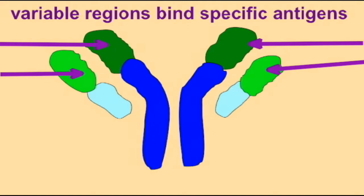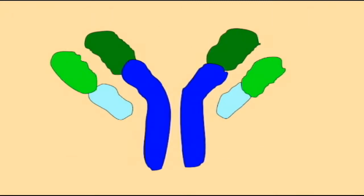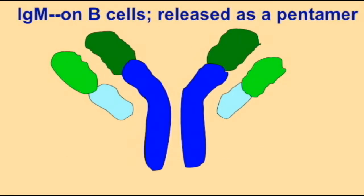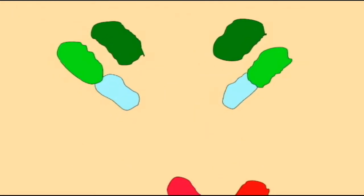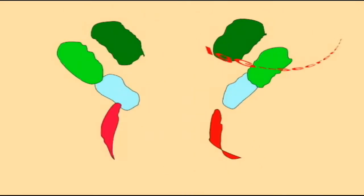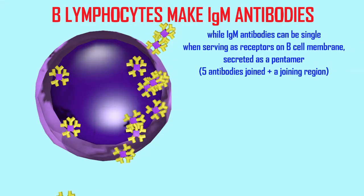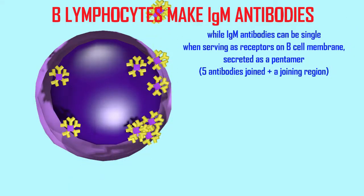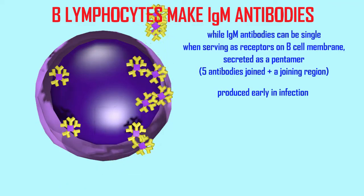B lymphocytes produce antibodies, but the base of antibodies can be changed in something known as class switching, so that antibodies which all bind the same spike proteins on coronavirus could then have different bases and be IgM — the receptors on B lymphocytes, which can be secreted in a group of five — IgG, the primary antibody in blood plasma, or IgA, the primary antibody secreted from the body, such as in the secretions of the lungs.